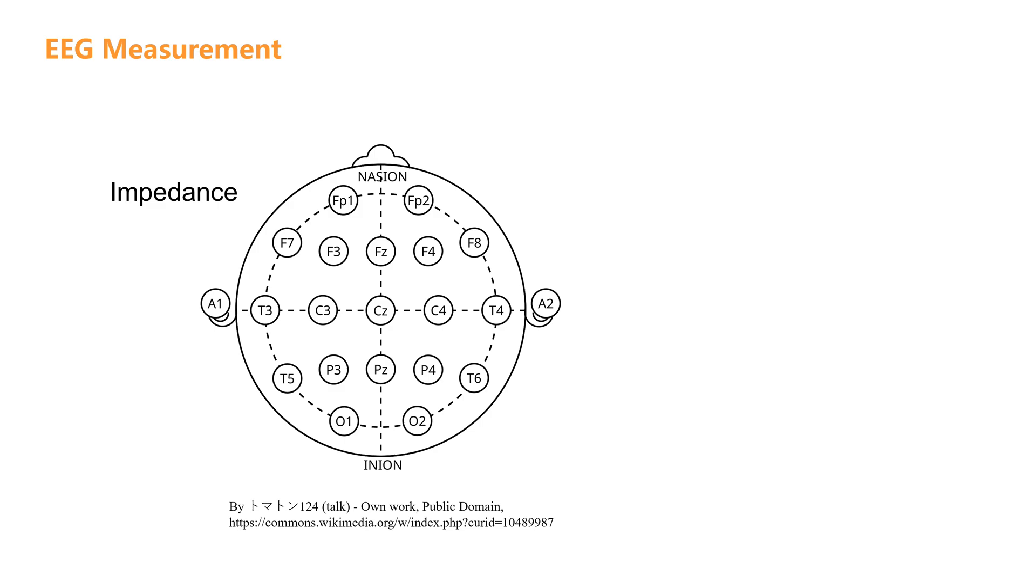If the impedance is too high, the signal can be contaminated by noise, similar to the static you hear when headphones have a poor connection. Generally, the impedance needs to be below 5 kilo-ohms to ensure signal clarity.